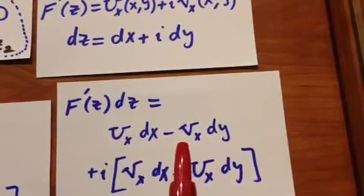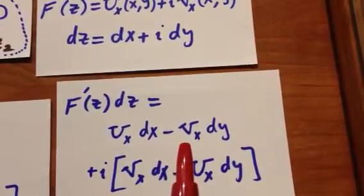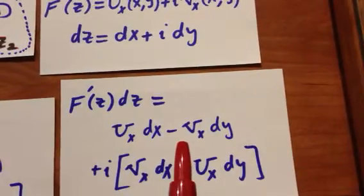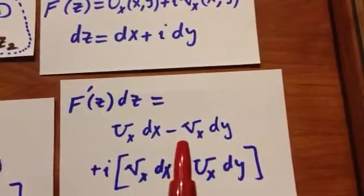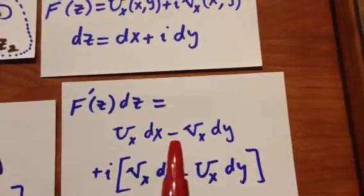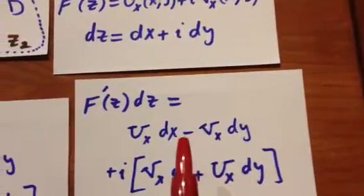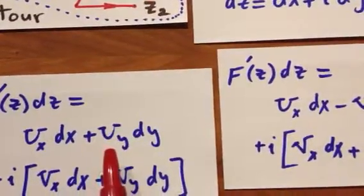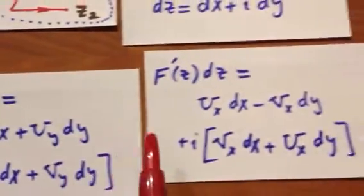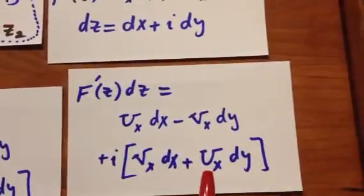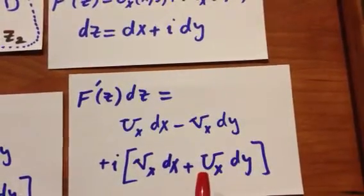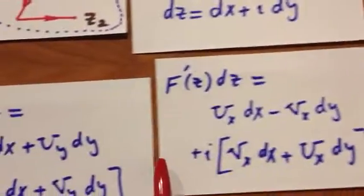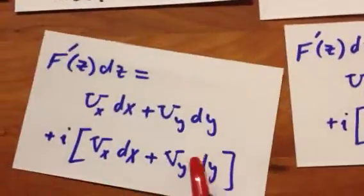Again, the important assumption is that F is analytic. Therefore, by the Cauchy-Riemann equations, minus V_x can be replaced by U_y, and U_x can be replaced by V_y. And then we get this.